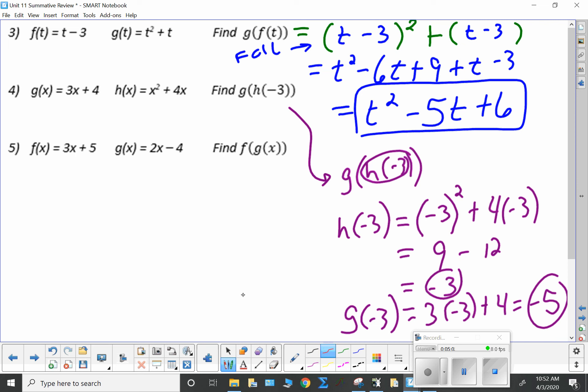3 times negative 3 plus 4. That's negative 9 plus 4 is negative 5. Alrighty. Here, f of g of x. f of x is 3. There's my x plus 5. What is g of x?